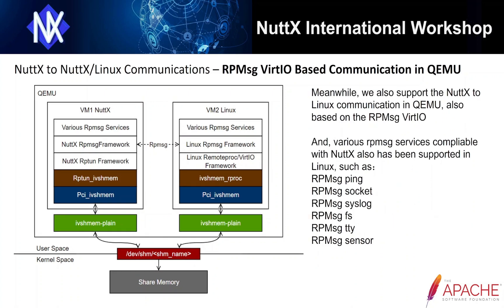In addition, we also support NuttX-to-Linux communication in QEMU, also based on the ivshmem PCI device and the RP message virtual transport layer. As shown in the left figure, the difference is that virtual machine 2 is changed to Linux. Like what we do in NuttX, we also implement a PCI ivshmem driver in Linux, and then implement the remote RPTUN ivshmem driver based on that. Moreover, we support various IP message services compatible with NuttX, such as the IP message ping, the IP message socket, the IP message syslog, the IP message file system, the IP message TTY, and the IP message sensor.